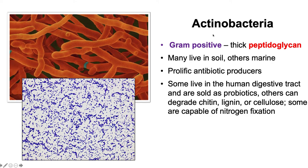We also have actinobacteria. So under a microscope, after you do a gram stain, actinobacteria appear purple. So they have thick layers of peptidoglycan. Lots of these guys live in the soil. We use these to create antibiotics.